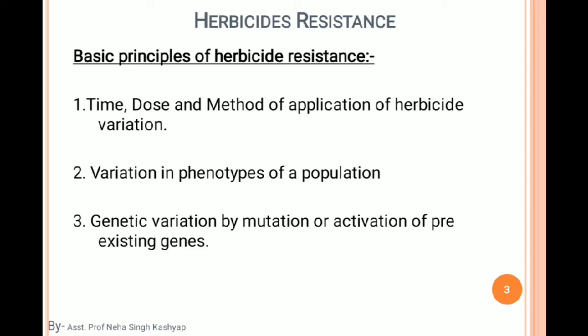Due to phenotypic variation, resistance power also develops. The parent weed forms seeds, and in those seeds there is adaptivity — a variation in genotype. This also affects herbicide resistance. Phenotype means morphological traits visible from outside, such as broad, short, narrow, hollow, dense, deep-rooted, or shallow-rooted characteristics — these are phenotypes of any plant.